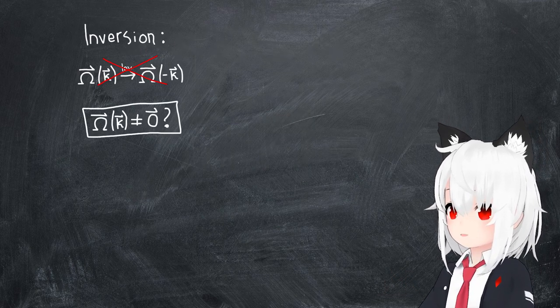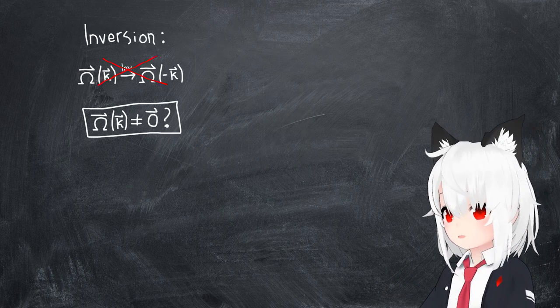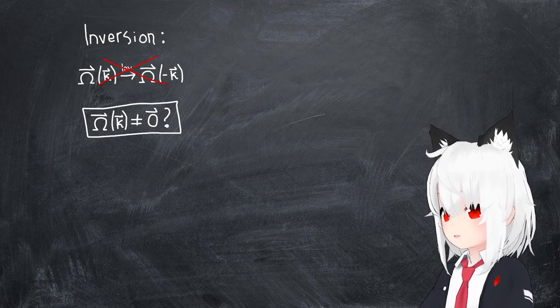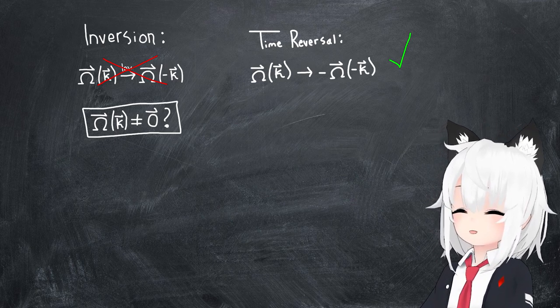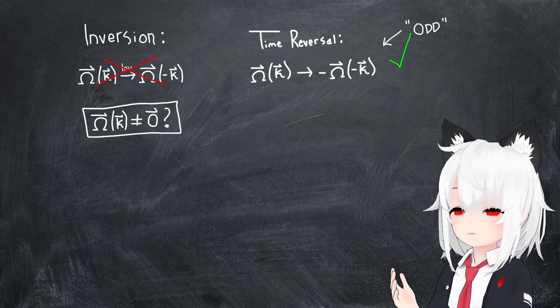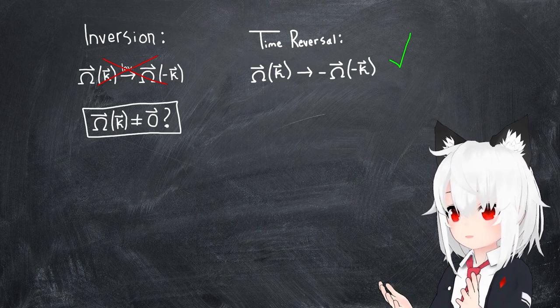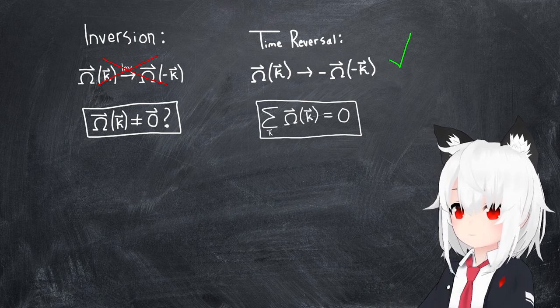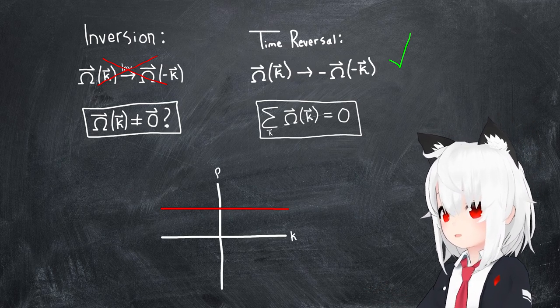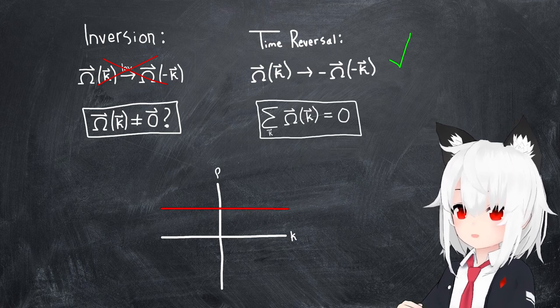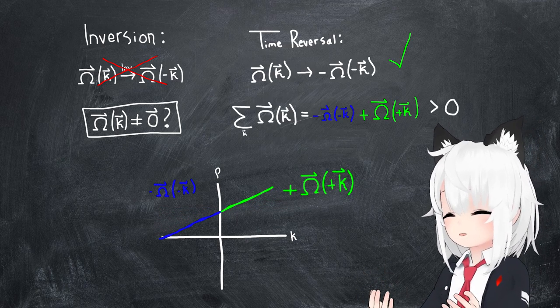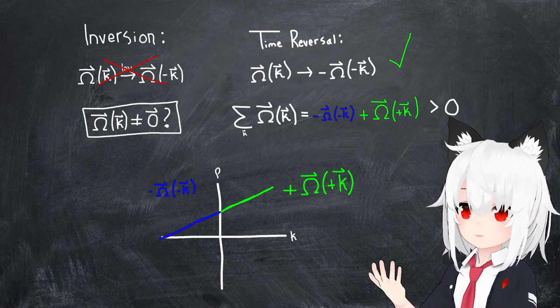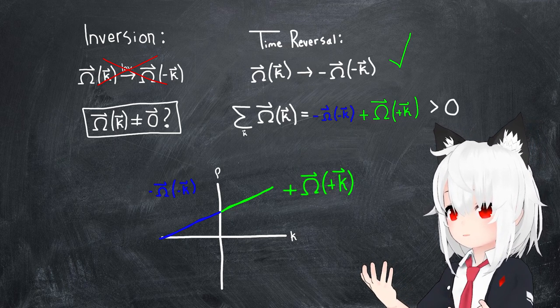So while the breaking of spatial inversion symmetry might give rise to a non-zero value of Berry curvature, the preservation of time reversal symmetry mandates that it must still be an odd function of momentum, meaning that its net sum still goes to zero. The only way around this would be to populate the particles themselves more heavily on one side of momentum space than the other, so that, for example, the net positive contribution of Berry curvature outweighs the net negative one.